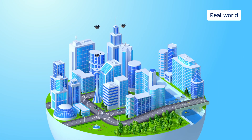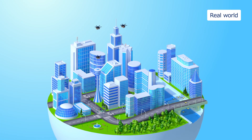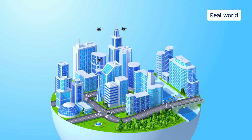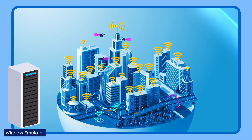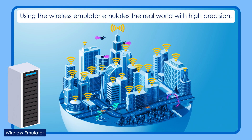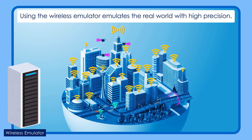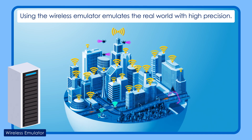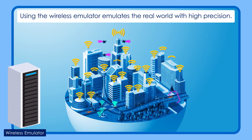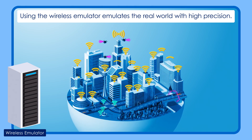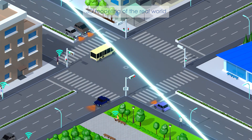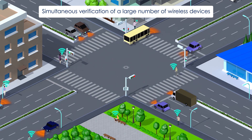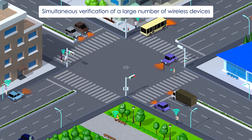In order to solve these problems, the use of a wireless emulator is expected. The wireless emulator is a system that enables verification of wireless devices by reproducing radio wave propagation in actual buildings in cyberspace. It enables real-time verification of a large number of wireless devices on a 3D model that emulates the real world with high precision.